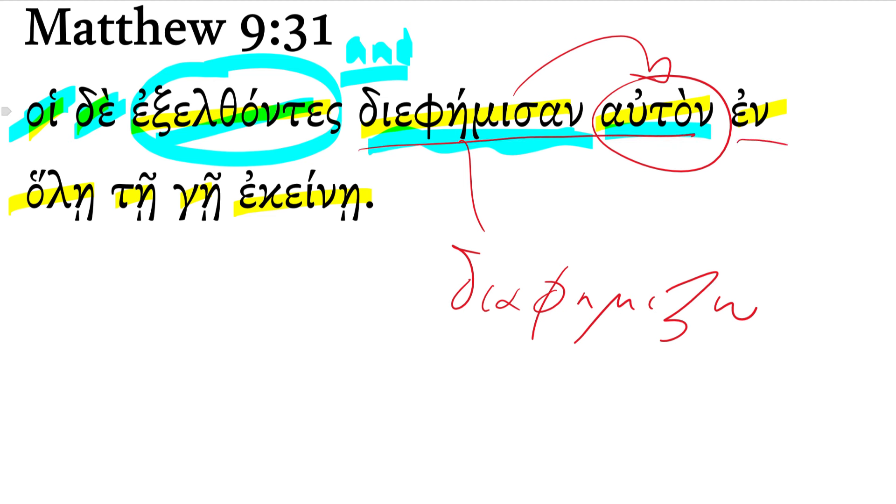So they spread news about him in all that land, in all that region. There's our far demonstrative pronoun, attributively modifying the dative noun there—earth or land, here obviously in the sense of region.